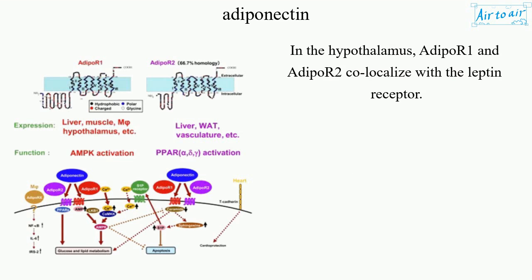In the hypothalamus, AdipoR1 and AdipoR2 co-localize with the leptin receptor.